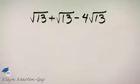Let's perform the indicated operation. I have square root of 13 plus square root of 13 minus 4 square root of 13.